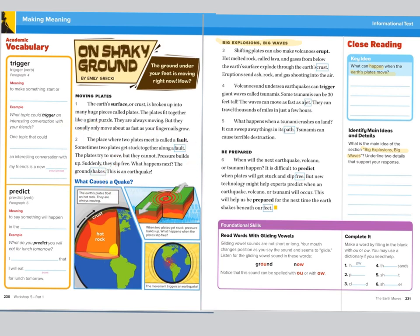Now I'm going to read "Big Explosions, Big Waves." "Shifting plates can also make volcanoes erupt. Hot melted rock called lava and gases form below the earth's surface and explode through the earth's crust. Eruptions send ash, rock, and gas shooting into the air. Volcanoes and undersea earthquakes can trigger giant waves called tsunamis. Some tsunamis can be 30 feet tall."